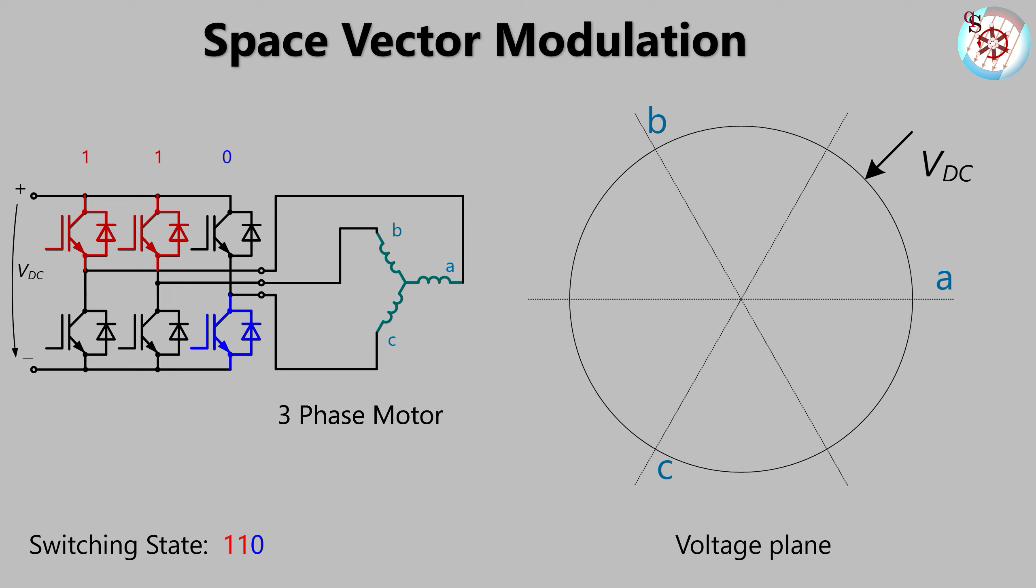This time the voltage across A and B are positive but their value is one-third. The two-third voltage appears now across C but negative. Again adding that one-third voltages from A and B first, we are getting the black vector. Now we add this to the blue minus C voltage. This results in the green 110 voltage space vector with its length of VDC at an angle of plus 60 degrees.